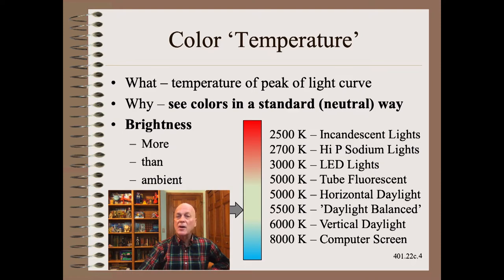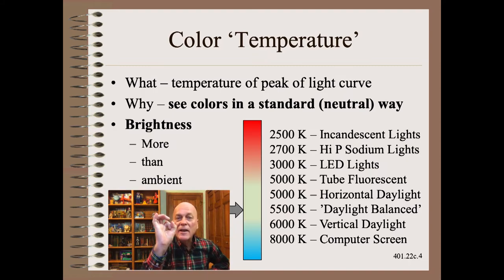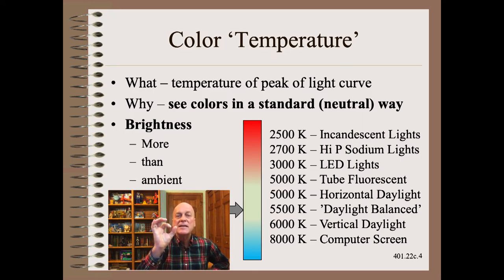Lastly, we should talk about brightness. The brightness on the web should be somewhat higher than the highest ambient brightness around the machine. This has to do with the speed of light adaptation — the pupils in your eyes can narrow within seconds when exposed to bright light, but take many minutes to dilate when in dim light.